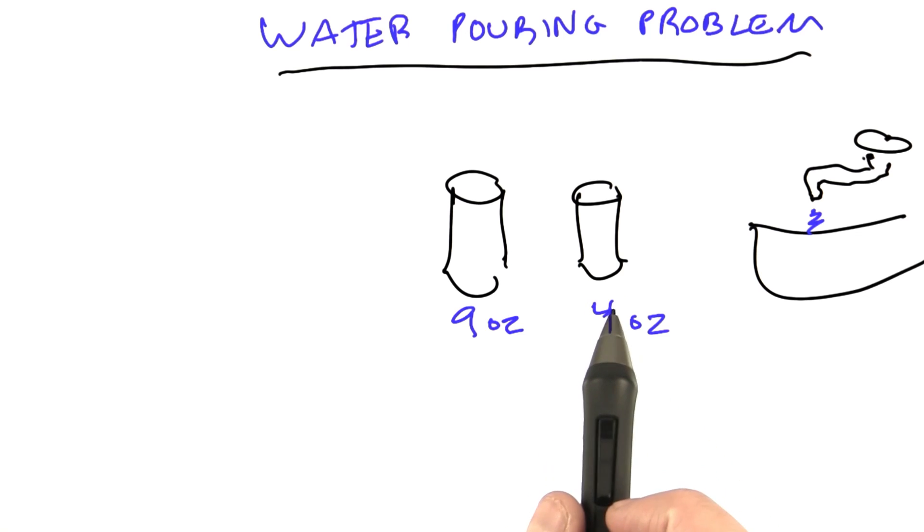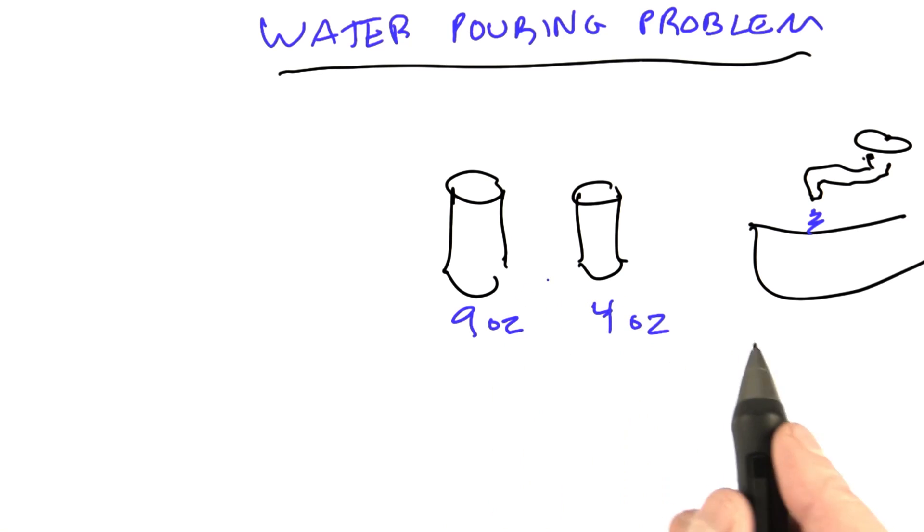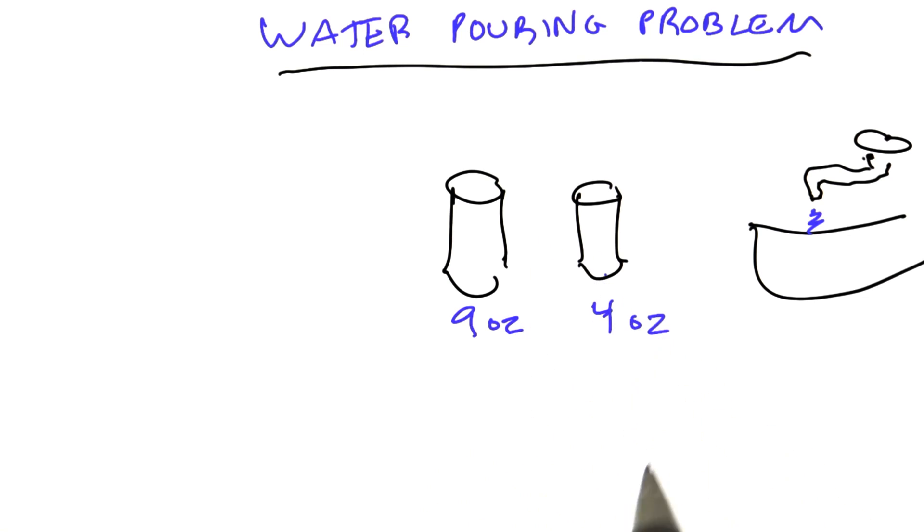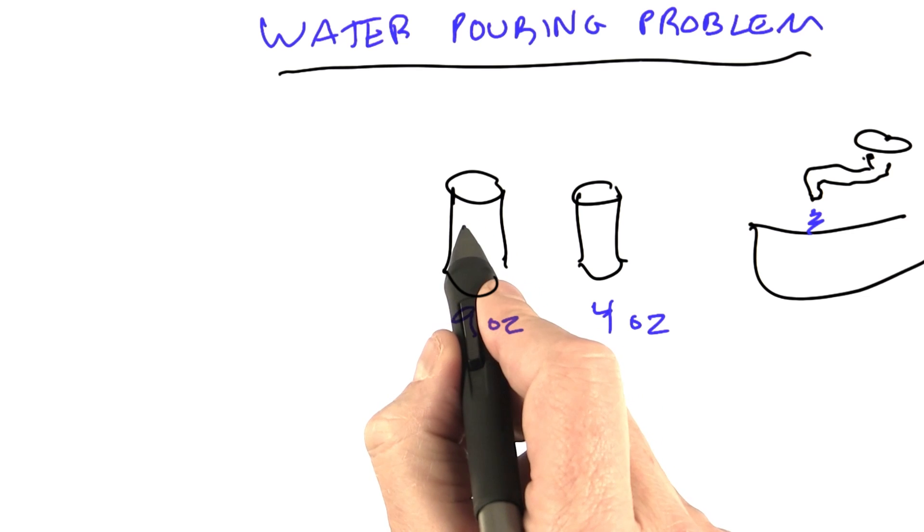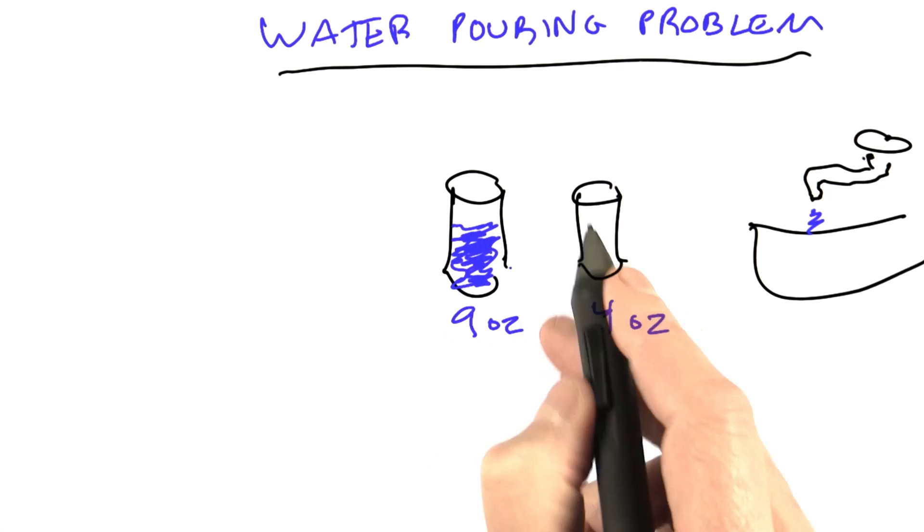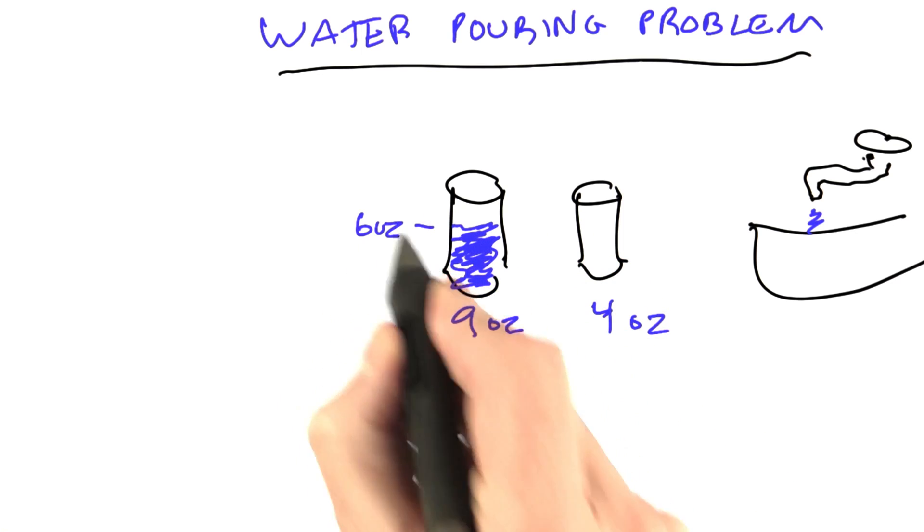Our goal is to measure out a specific amount of water, and what we want to have is 6 ounces of water measured out. Six ounces won't fit in this glass, so the idea is at the end we want to have this glass filled with exactly 6 ounces of water.